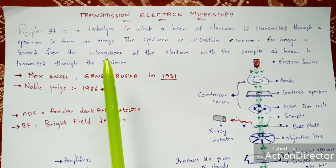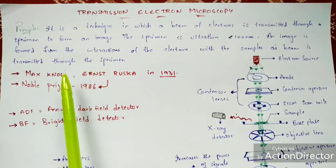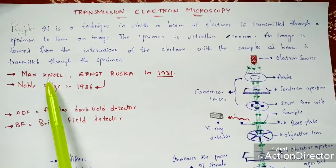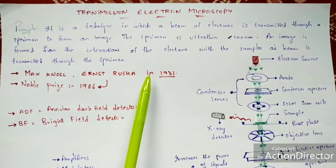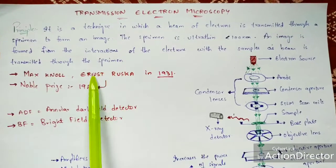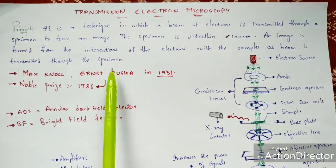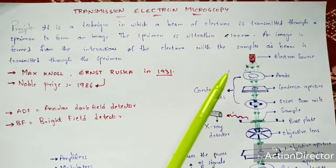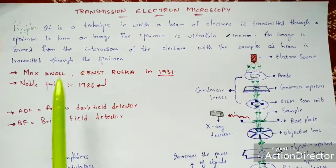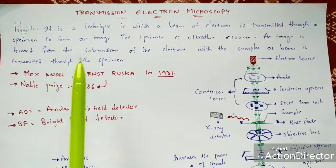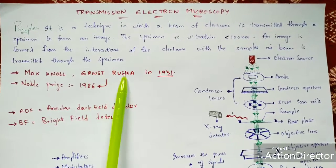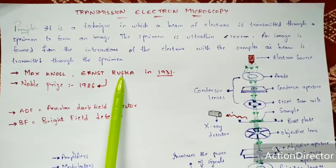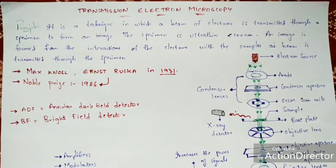Transmission electron microscopy was first discovered by Maxwell and Ernst Ruska in 1931. Ernst Ruska put a lot of efforts into this discovery, and so Ernst Ruska was awarded the Nobel Prize in 1986.